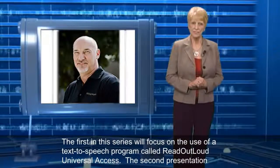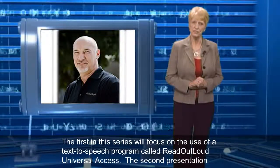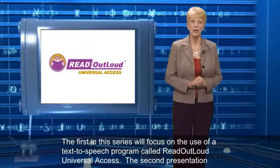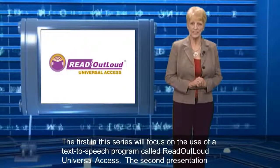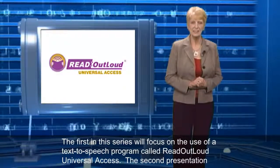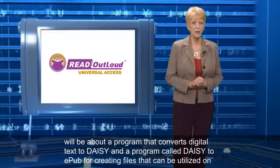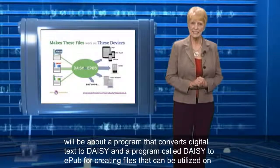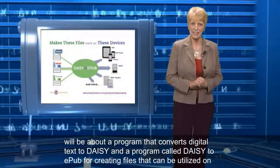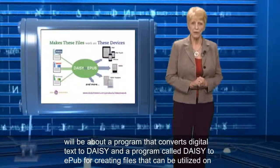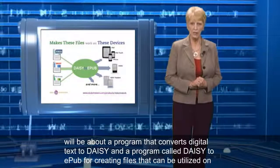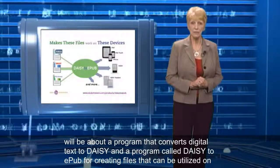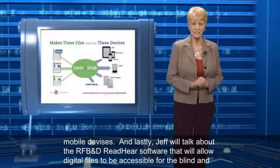The first in this series will focus on the use of a text-to-speech program called Read Out Loud Universal Access. The second presentation will be about a program that converts digital text to DAISY, and a program called DAISY to EPUB for creating files that can be utilized on mobile devices.